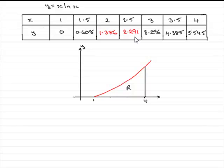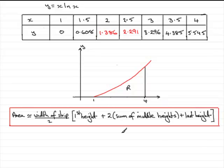In the next part, we've got to use the trapezium rule to find the area of R. Hopefully you're familiar with the trapezium rule. Basically, just to quickly remind you, here it is: the area under a graph is approximately the same as working out the width of a strip divided by 2.